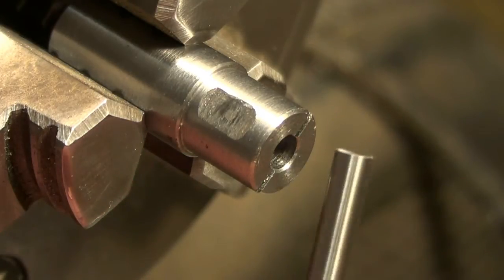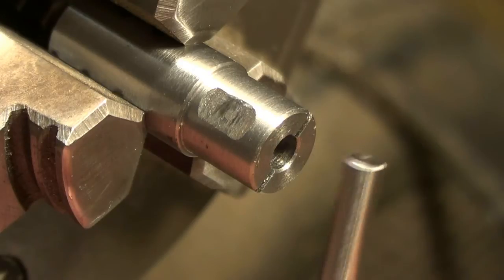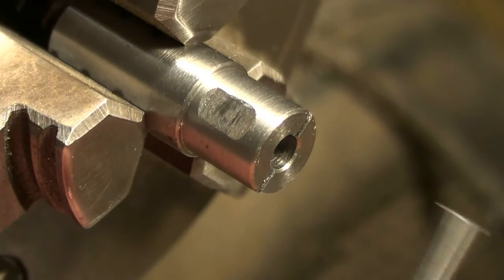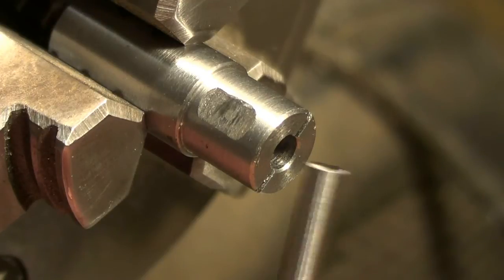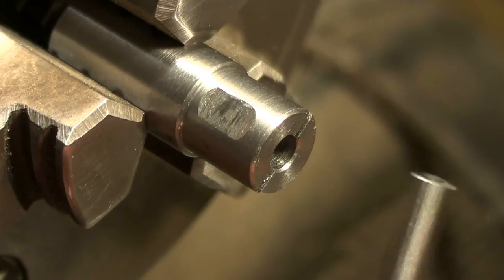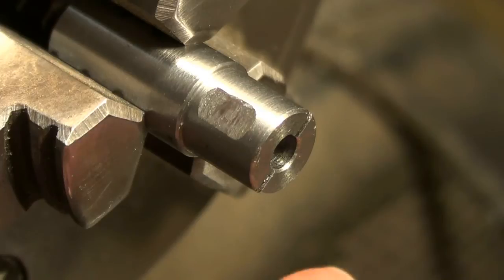I could have put this into the four jaw chuck and centered it every time, but that's quite laborious. The three jaw chuck isn't accurate enough and I don't have any collets for the spindle, so I made up this little split collet.